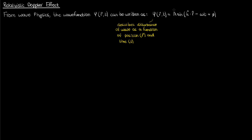For a sound wave, the psi would describe the air pressure at different locations and at different times. A represents the amplitude of the wave disturbance, omega represents the angular frequency so 2pi times the regular frequency f, phi is the phase shift, the r vector represents the position vector at which we're evaluating the wave disturbance psi, and t represents the time.